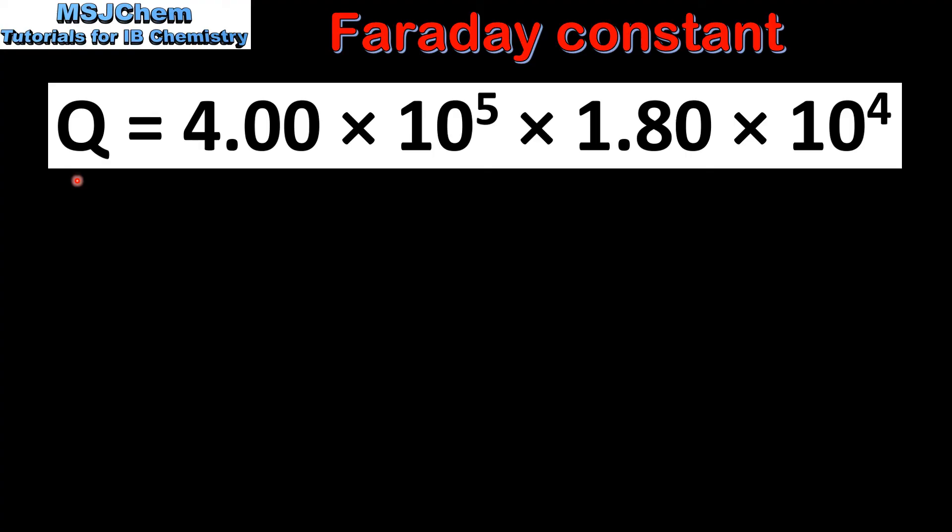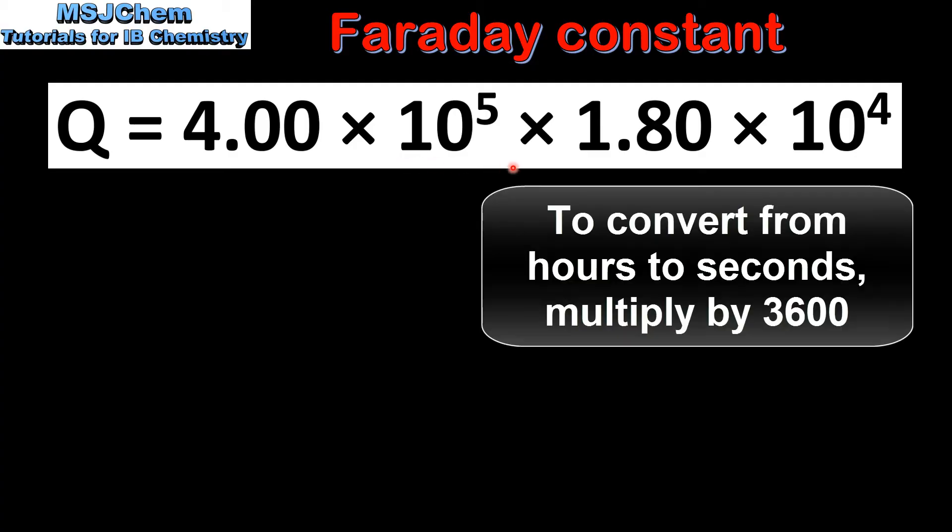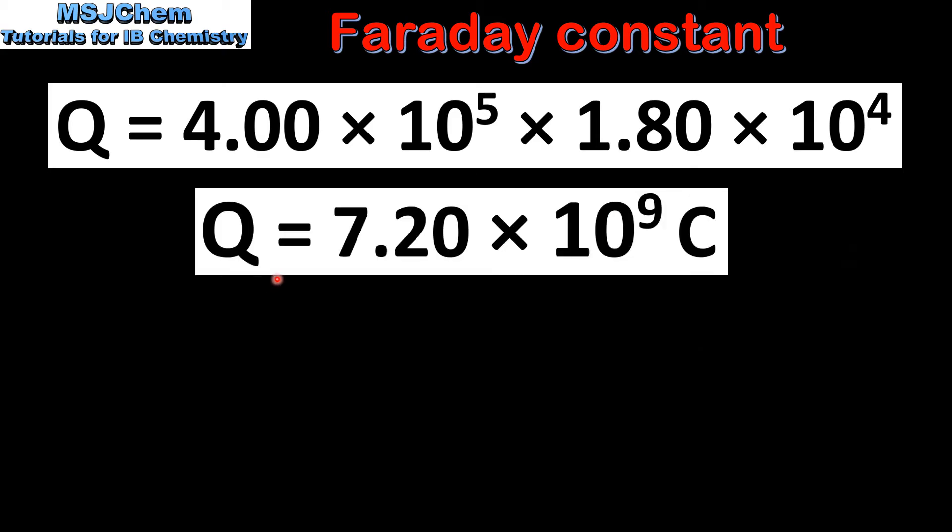The first step is to calculate the amount of charge that passes through the electrolytic cell using the equation Q equals IT. The current was 4.00 times 10 to the 5 amps, and the time was 5 hours which I've converted to seconds. When we do the calculation we get a value of 7.20 times 10 to the 9 coulombs.